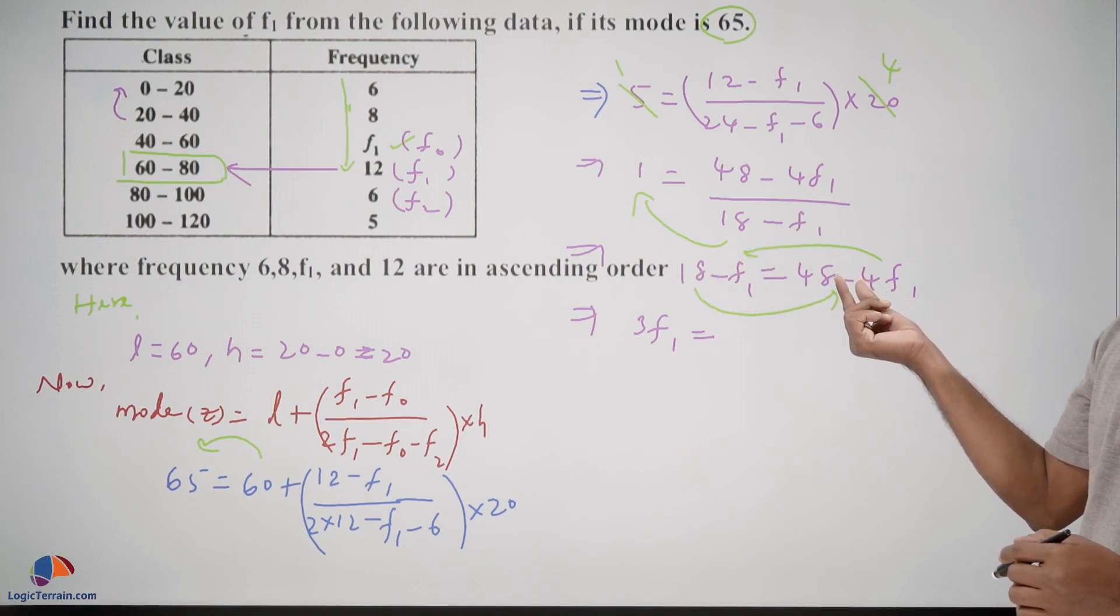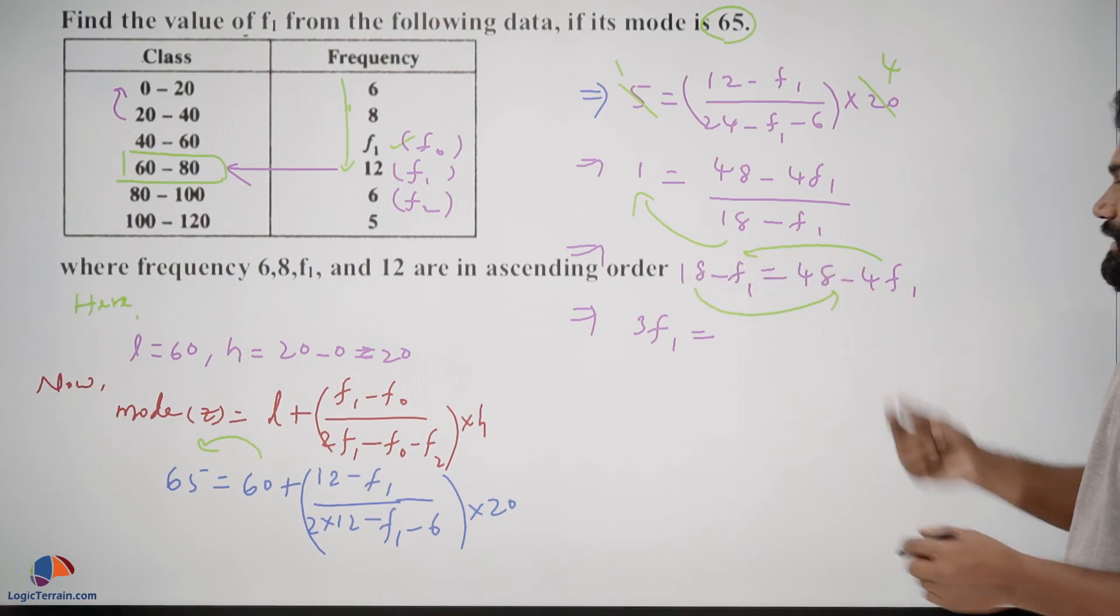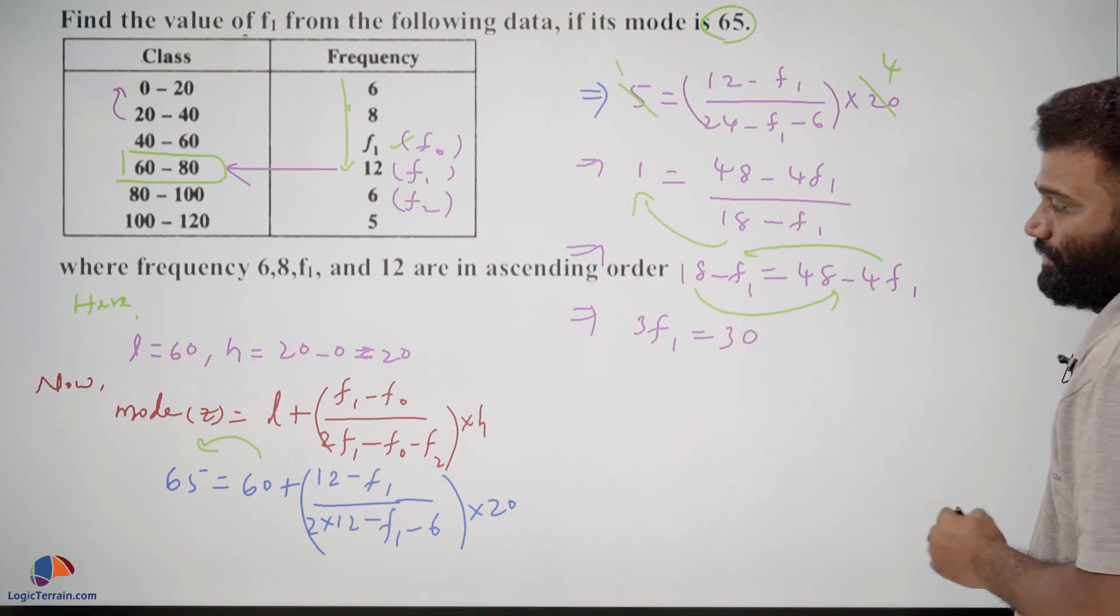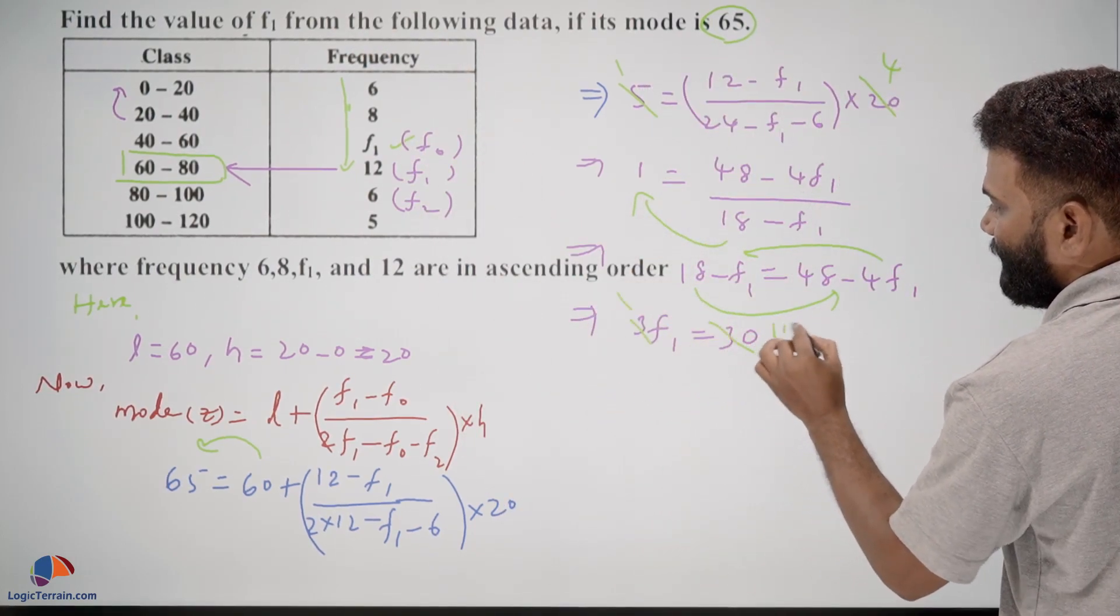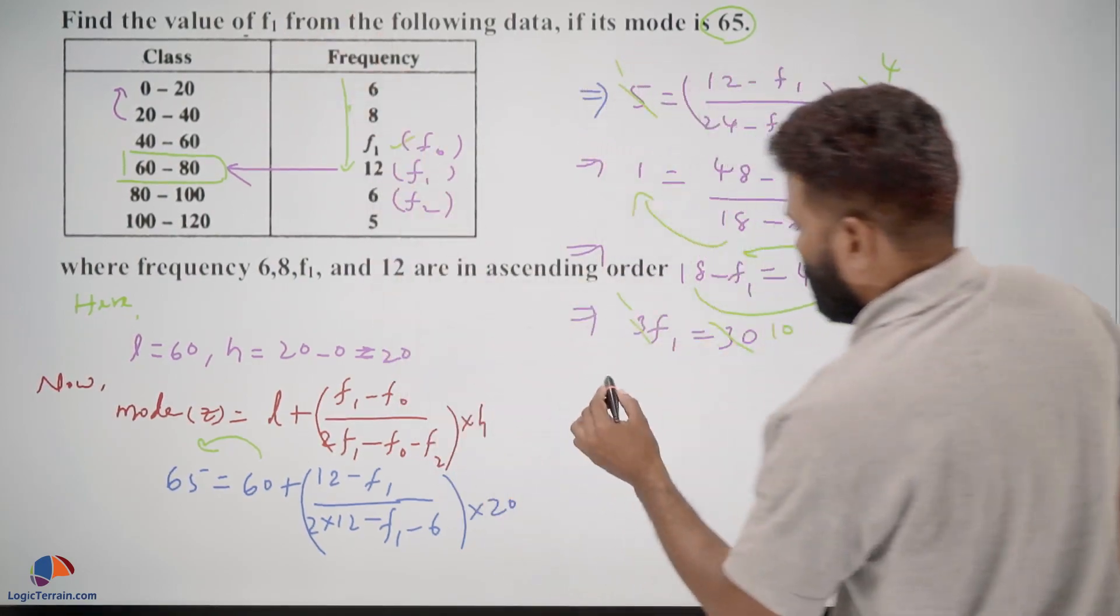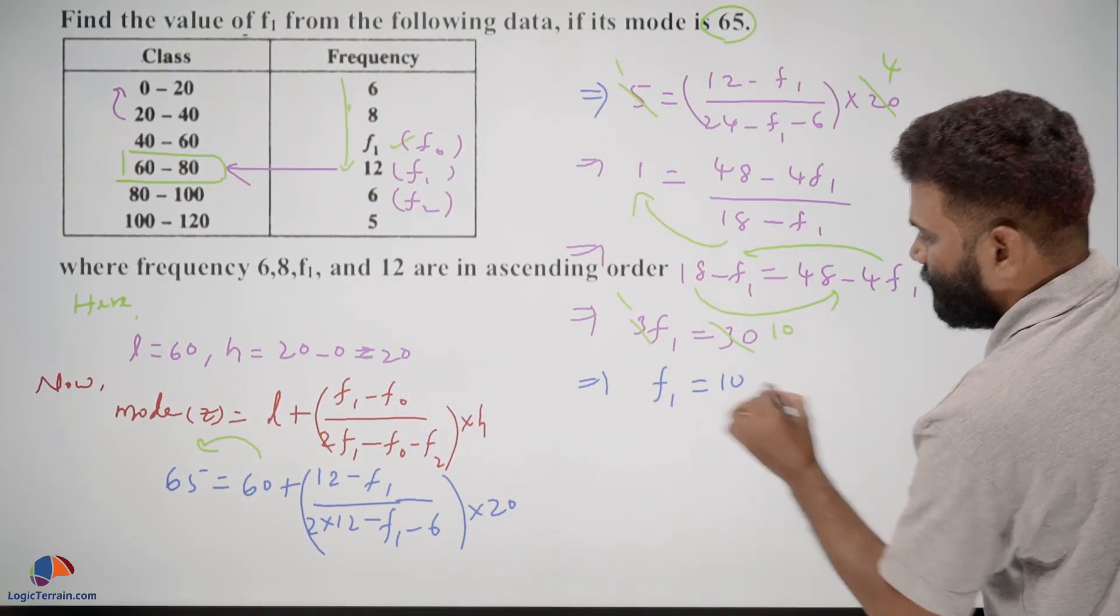And divide both sides with 3, so three ones are three tens. Then we got f1 is equal to 10.